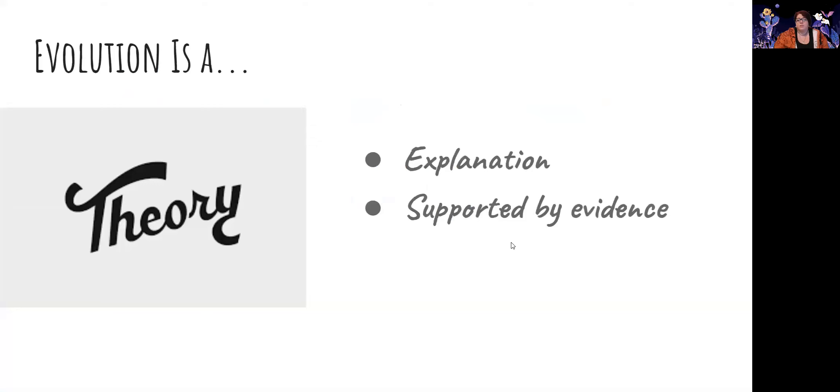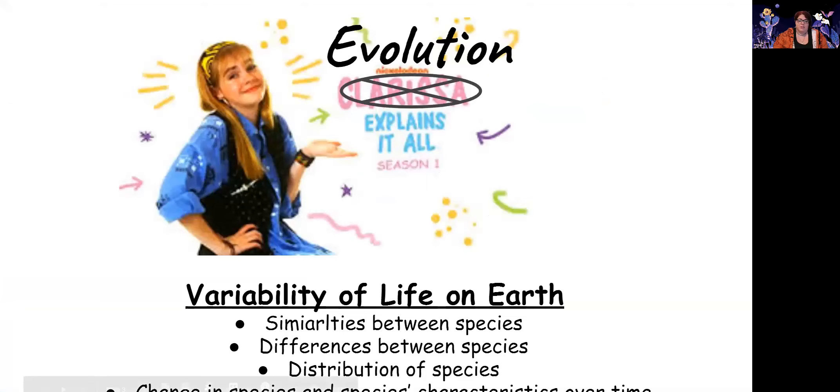Before we get to the actual ancestry part, we have to talk about the fact that evolution is a theory. So in science, theory means that it is an explanation and is supported by evidence. And what the explanation of evolution explains is pretty much everything. So you can show our age here, but back in the day we had Clarissa explains it all, and in biology we have evolution explains it all.